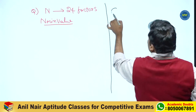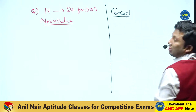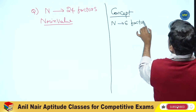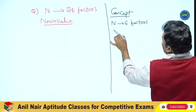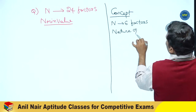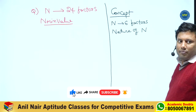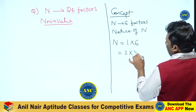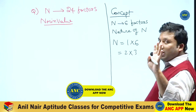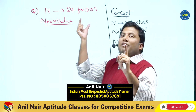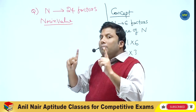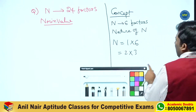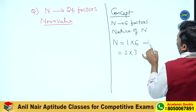I will never tell a problem without teaching the concept first. Suppose a natural number has got six factors. What is the nature of n? How will n look? Whenever the number of factors are given in the question, decompose it till every element is a prime number.